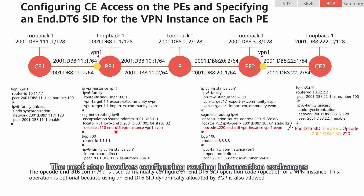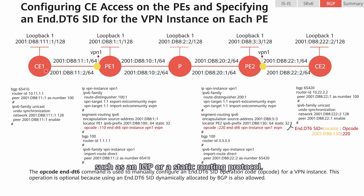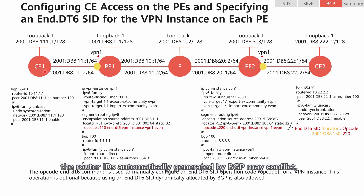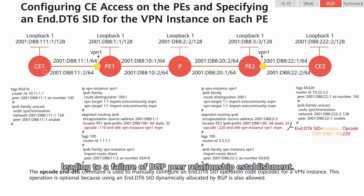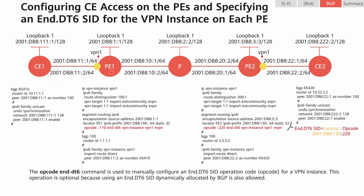The next step involves configuring routing information exchanges between P1 and C1. These exchanges can be implemented using multiple types of routing protocols, such as an IGP or a static routing protocol. We'll use BGP for this example. Note that router IDs must be planned across the entire network before BGP configuration. Because the network involves only IPv6 addresses instead of IPv4 ones, the router IDs automatically generated by BGP may conflict, leading to a failure of BGP peer relationship establishment. For this reason, we need to plan router IDs before configuring BGP.